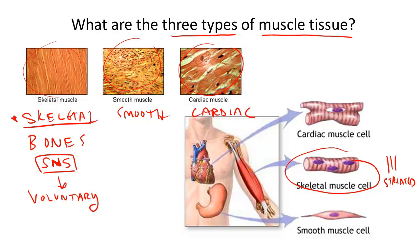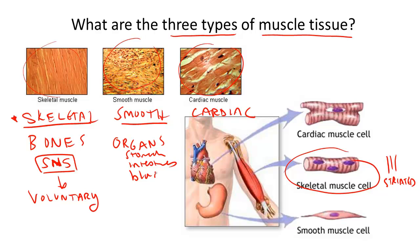The next type of muscle tissue is called smooth muscle tissue. Smooth muscle lines the inside of hollow organs, such as the stomach, intestines, and the bladder, among others. Smooth muscle, since it's controlled by the autonomic nervous system, is involuntary, meaning you cannot control this movement.